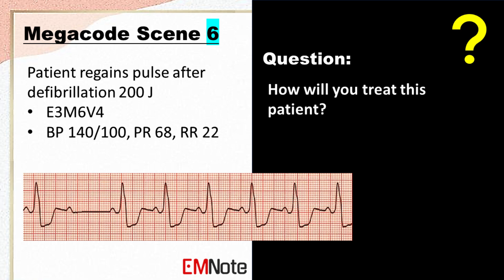The patient has regained a pulse after defibrillation with 200 joules. His vital signs are as follows: GCS E3M6V4, blood pressure 140/100 mmHg, pulse rate 68 beats per minute, and respiratory rate 22 breaths per minute.